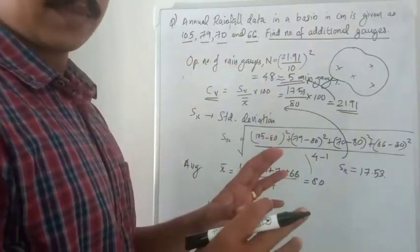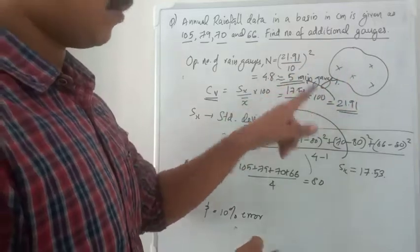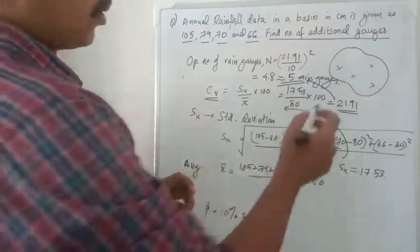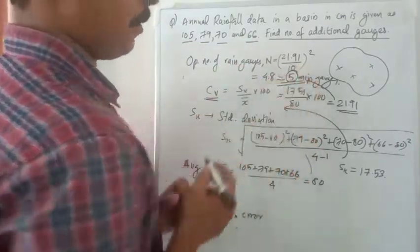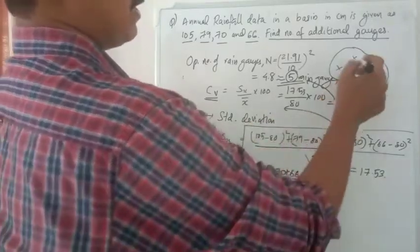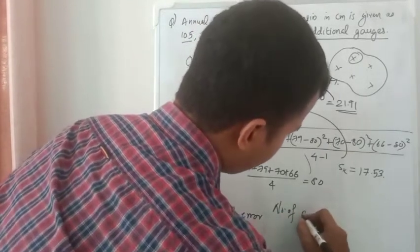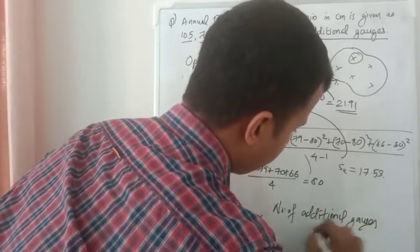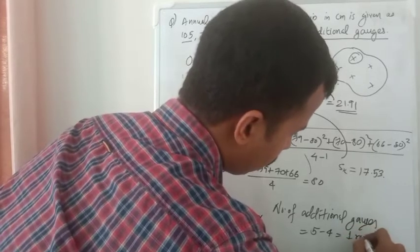The optimum number of rain gauges is 5. Currently there are four rain gauges. The question asks for the number of additional rain gauges required at the basin. So the optimum number is 5, and additional gauges required = 5 − 4 = 1 rain gauge.